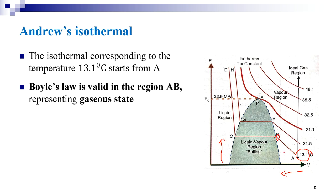Next, the volume decreases rapidly from point B with pressure almost remaining constant — a plateau parallel to the volume axis is seen. The region BC represents the progressive liquefaction of the gas. In region BC, the vapor and the liquid are in equilibrium; both the gaseous phase and the liquid phase are present. The gas gradually converts into liquid.